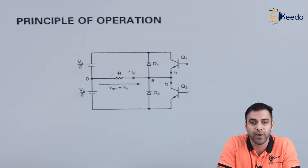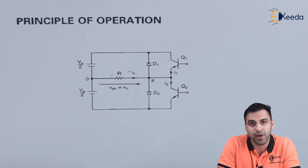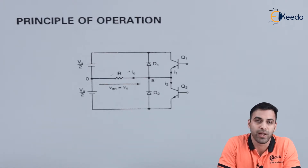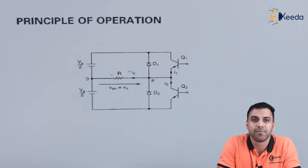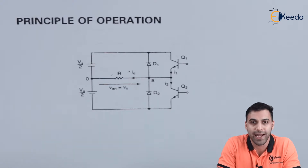We derived the mathematical expressions about the rectifier. But now, is it possible that we can convert a DC voltage to an AC voltage? Can we convert a DC constant voltage to a pulsating and inverting voltage? This is possible by using an inverter. The function of an inverter is that it converts a DC value to an AC value — it converts direct current to alternating current.